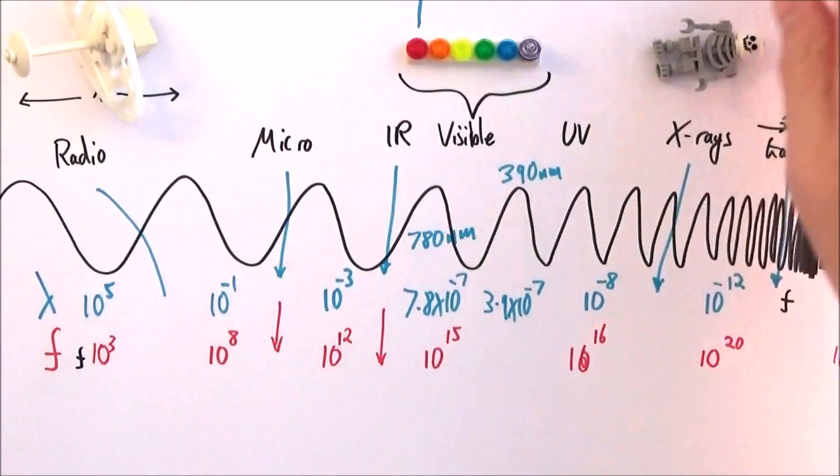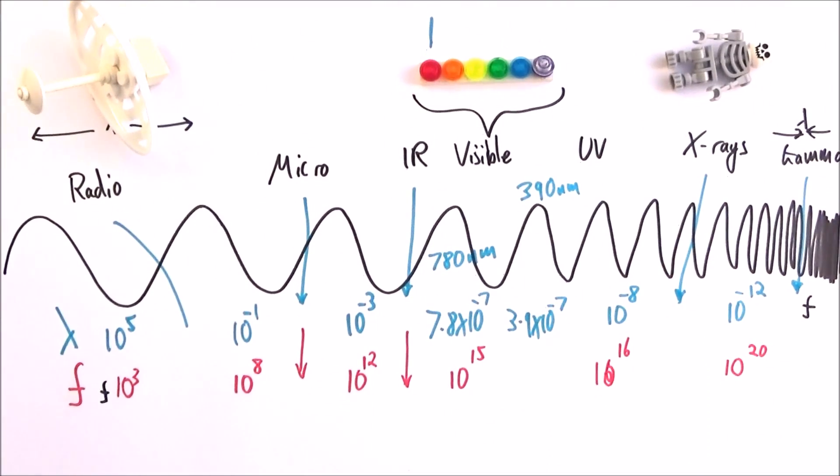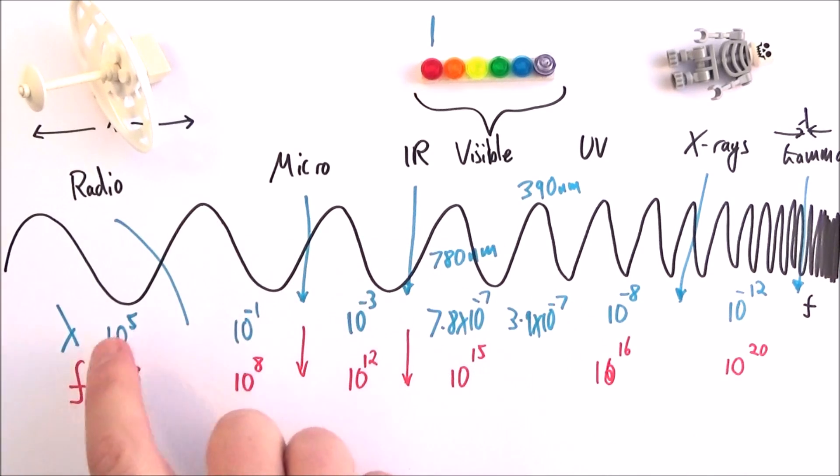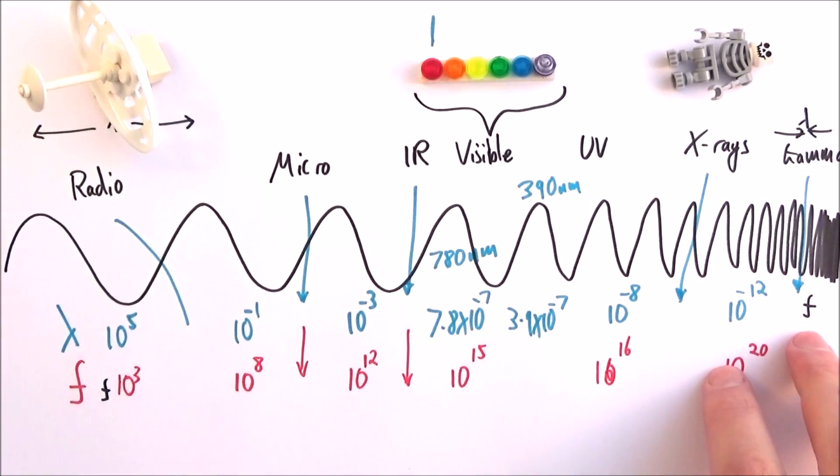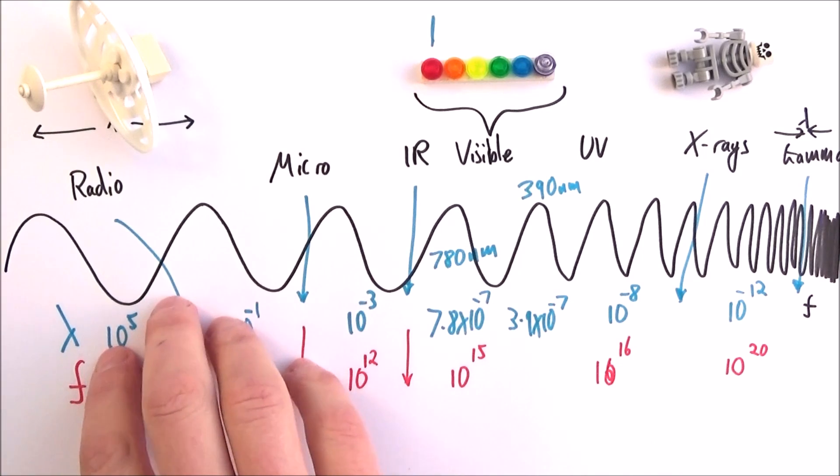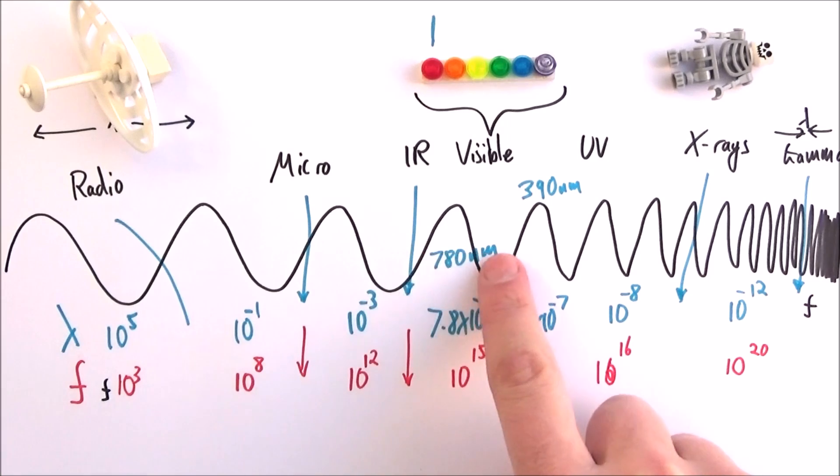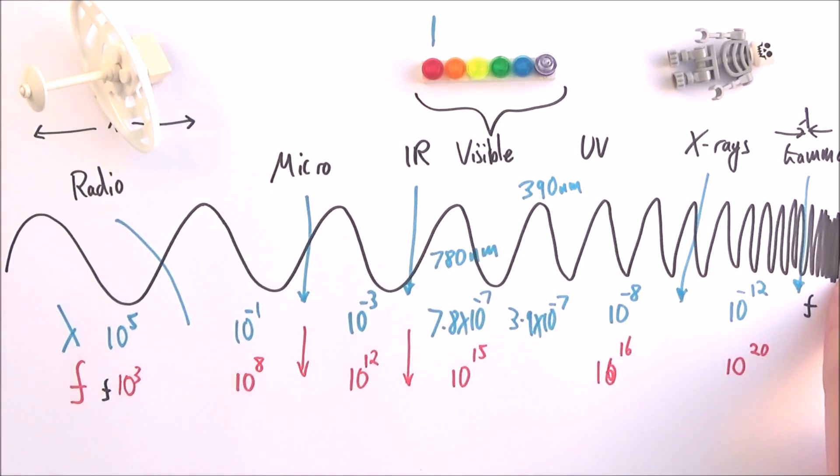So there we have it, the electromagnetic spectrum. And at some point, this is very much rote learning. You've just got to know about some of the frequencies and have an idea about the difference in magnitudes of the frequencies and wavelengths from radio, micro, infrared, visible UV, X-ray, all the way through to gamma radiation.